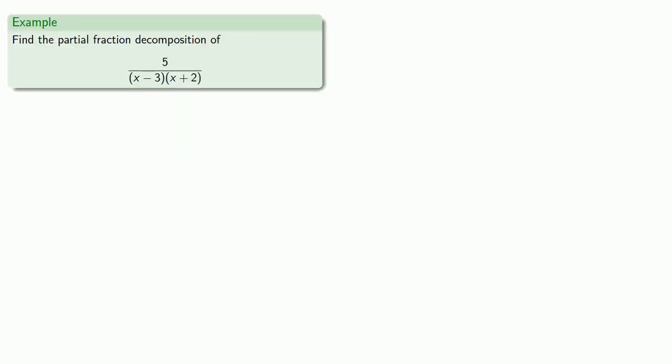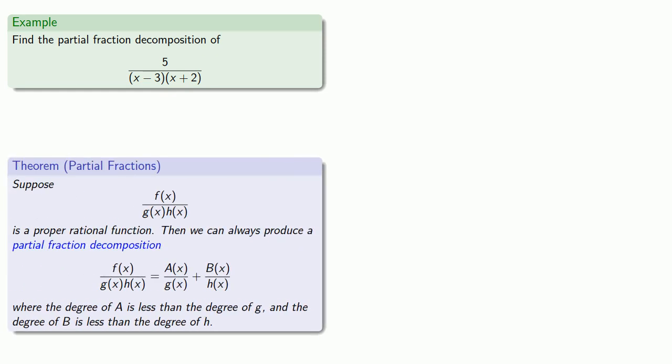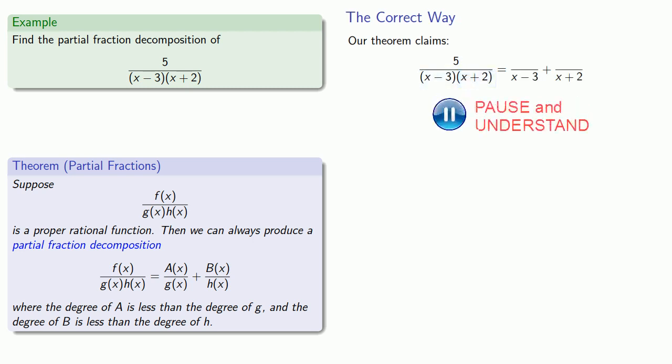So let's try to find a partial fraction decomposition. Since we're starting with a proper rational function our theorem guarantees we can write this as a sum of proper rational functions where the denominators are the individual factors. Here because both denominators are degree one this means that the numerators must be of degree less than one. They have to be constants and so we'll call them a and b.